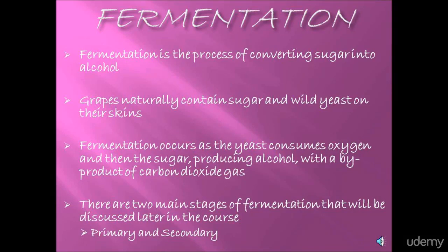Our first slide is on fermentation. Fermentation is the process of converting sugar into alcohol. Grapes contain sugar but they also contain wild yeast on their skins, which we'll talk more about later. Fermentation occurs as the yeast consumes oxygen and then the sugar, producing alcohol with a byproduct of carbon dioxide gas.